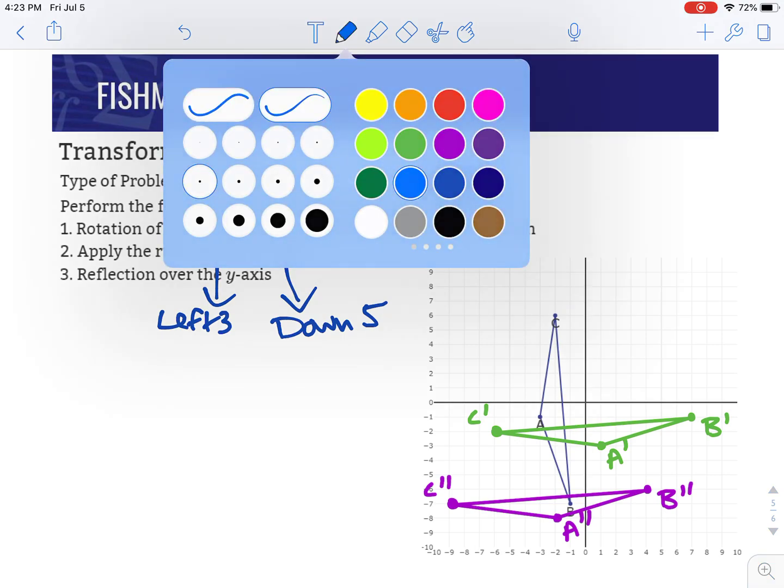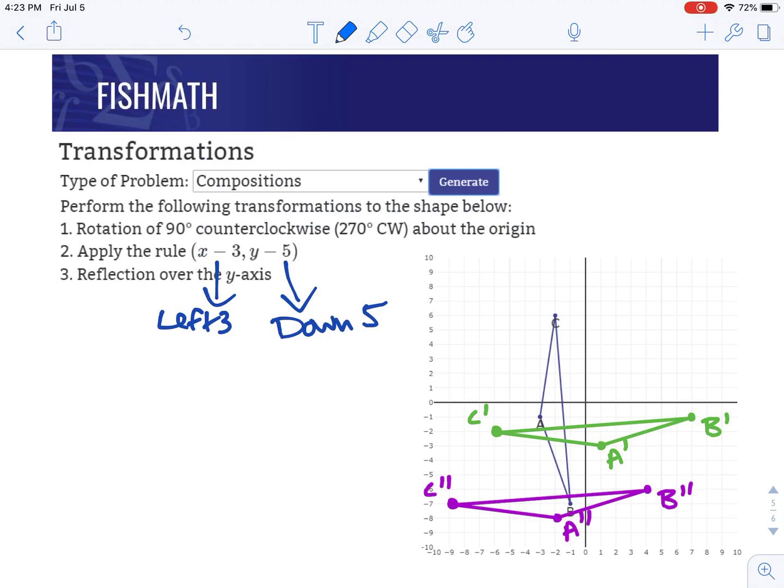Our last step is to take the last newest one, and we're going to reflect it over the y-axis. So the y-axis is the vertical axis right here. We're going to use this as our line of reflection, and we're going to flip everything that's on the left of the line to the right, and anything that's on the right of the line will go to the left.